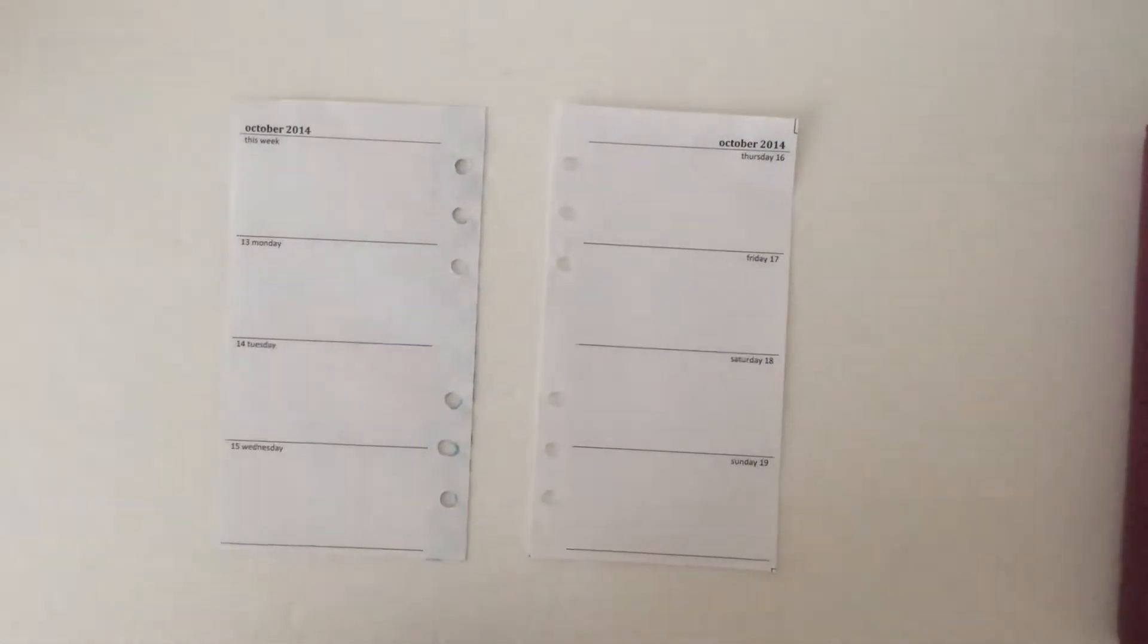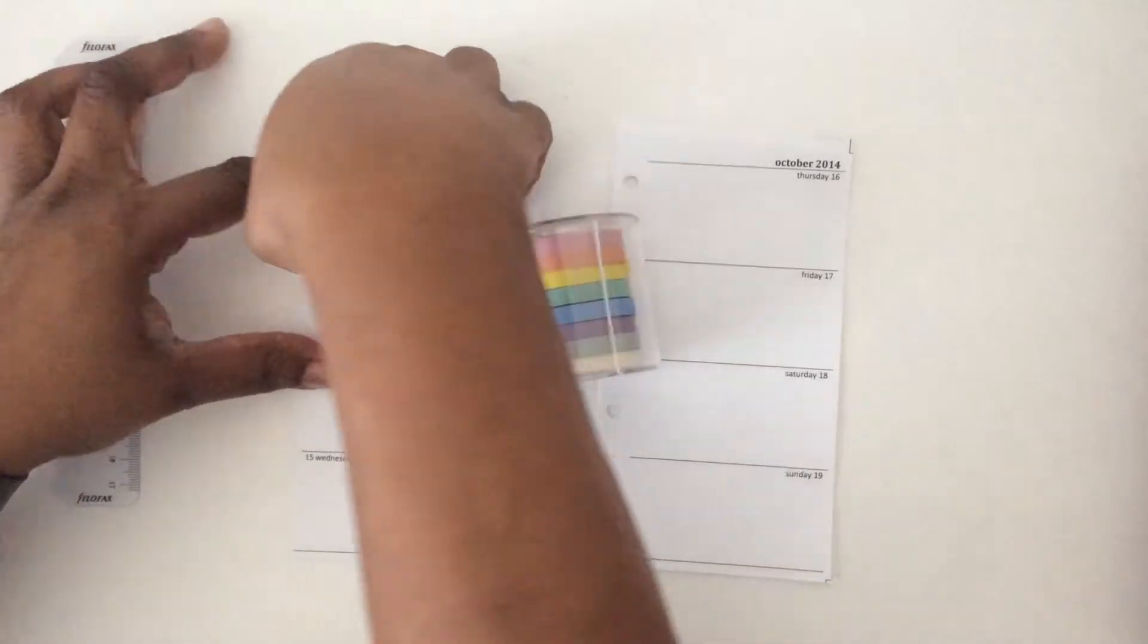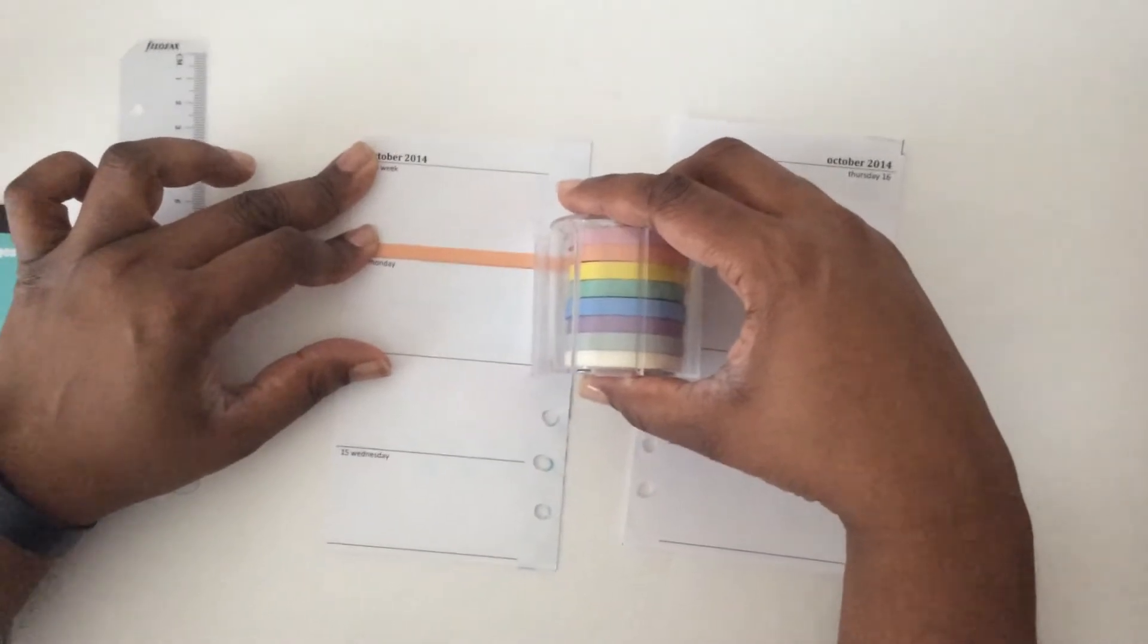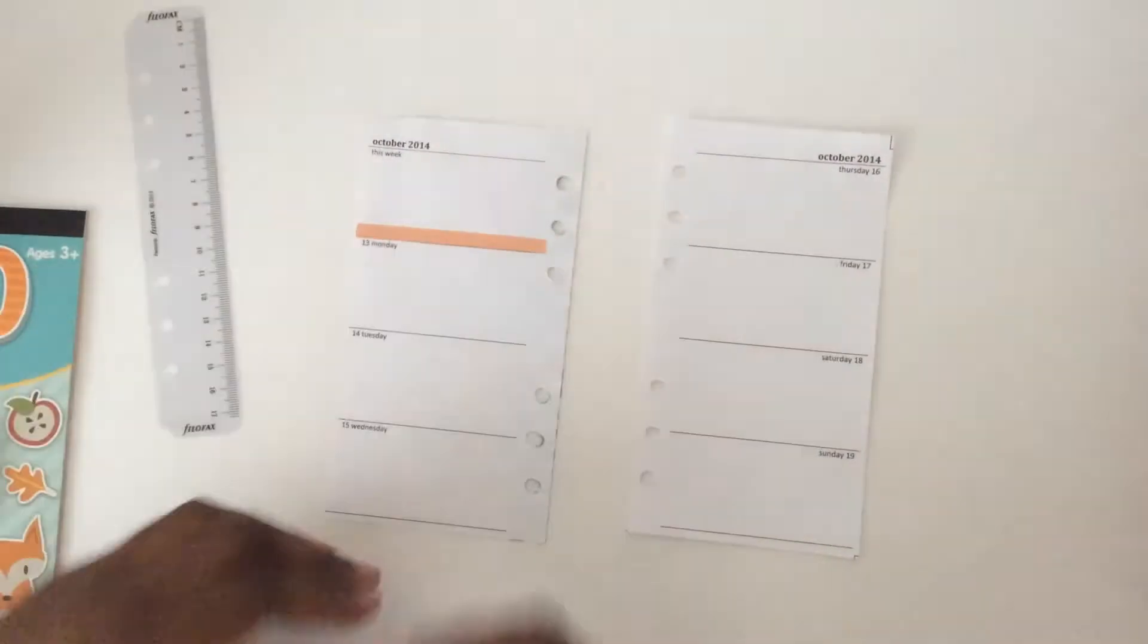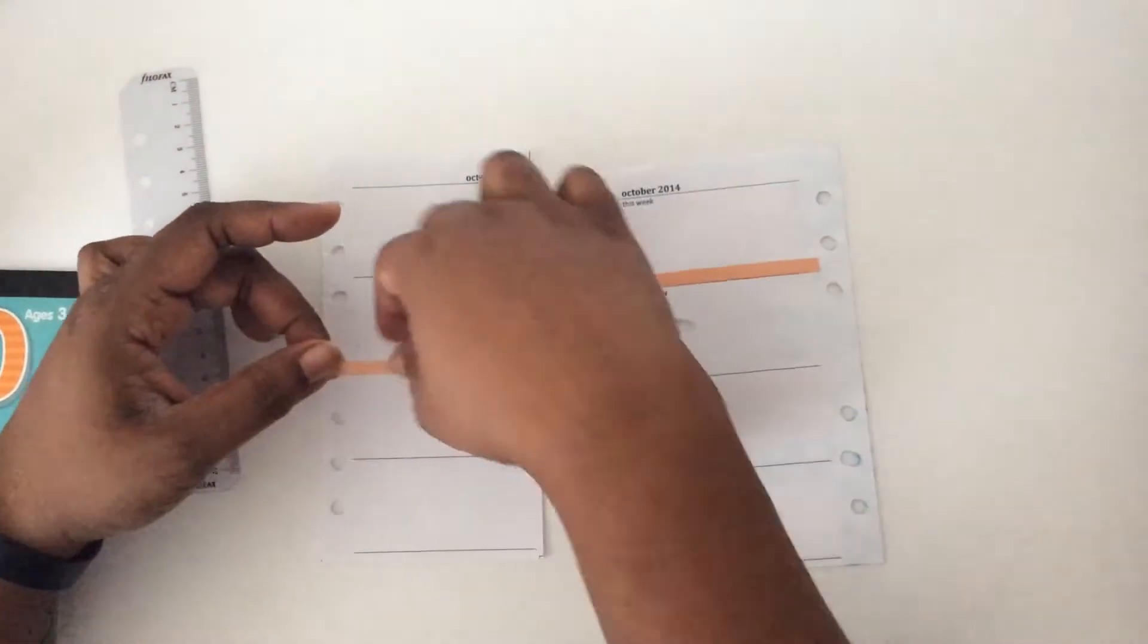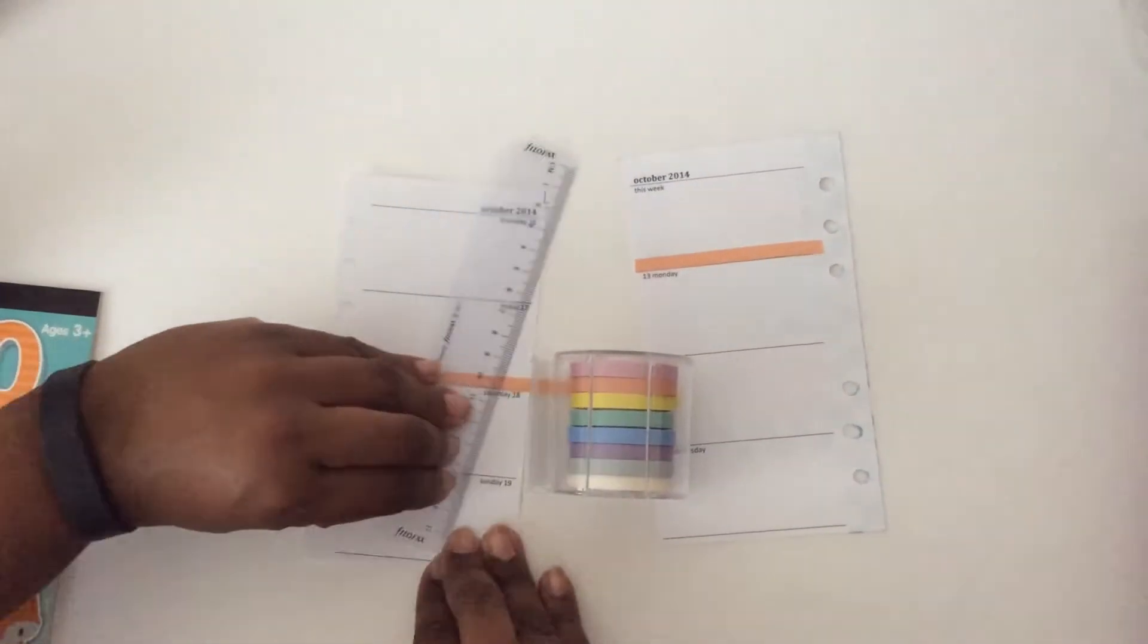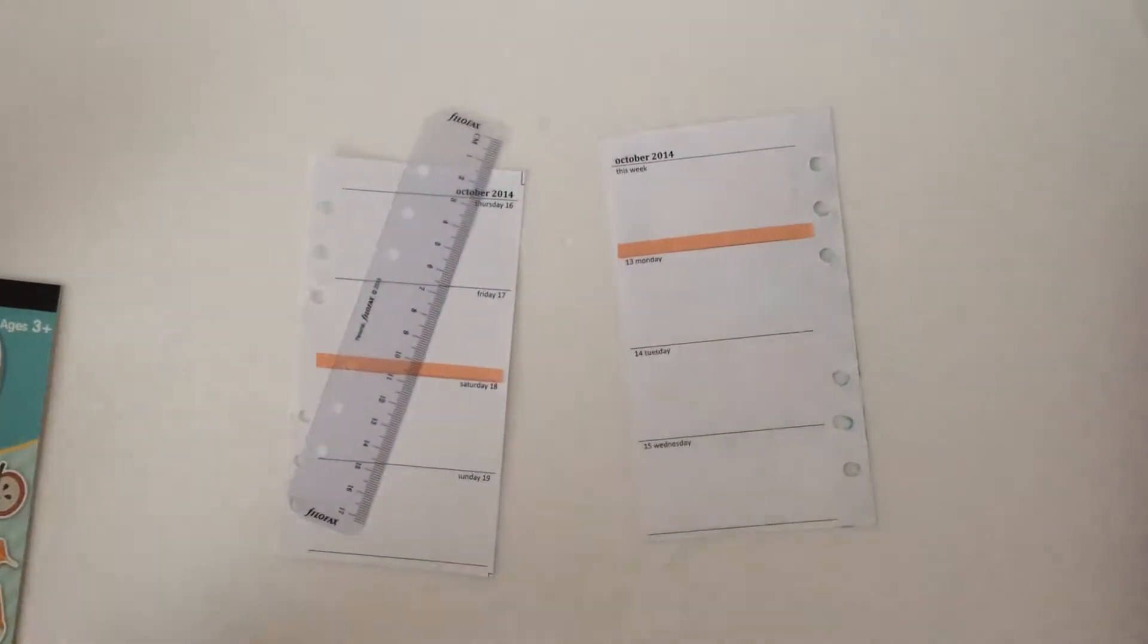First thing I'm going to do is section off the overview part of the week, that very first box on the top left from Monday, so that visually I remember that the very first box isn't Monday. And I'm also going to section off the weekend so that I remember where the weekend starts. I'm just using the ruler that came with my Filofax to tear the washi and it makes a nice clean edge. This washi tears very easily.